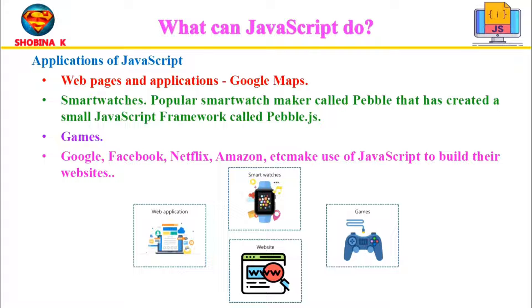JavaScript can also be used in smart watches. An example is the popular smartwatch maker Pebble, which created Pebble.js — a small JavaScript framework that allows developers to create applications for Pebble watches. Most popular websites like Google, Facebook, Netflix, and Amazon make use of JavaScript. Among things like mobile applications, digital art, web servers, and server applications, JavaScript is also used to make games.